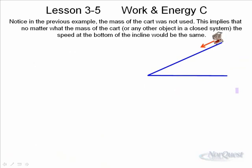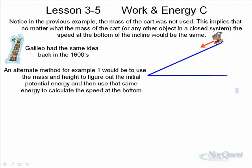You'll notice in this example that the mass of the cart was not used. This implies that no matter what the mass of the cart, whether it's a heavy mass or a light mass, the speed at the bottom would be the same. Galileo apparently had the same idea. He took a large cannonball and a smaller cannonball and dropped them both from the Leaning Tower of Pisa, and they both hit the ground at the same time as he had predicted. We don't know whether he really did this or not.